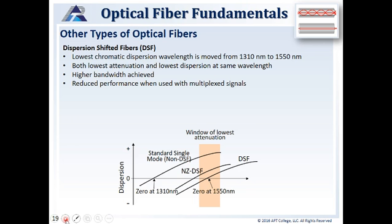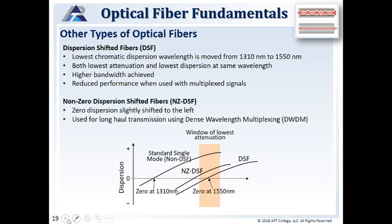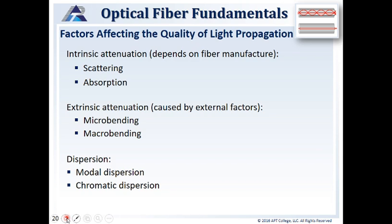We also have DSF, or dispersion-shifted fibers. In these fibers, the lowest chromatic dispersion wavelength is moved from 1,310 to 1,550 nanometers, so both the lowest attenuation and the lowest dispersion occur at the same wavelength, achieving a higher bandwidth or higher bit rate. They do have reduced performance when using multiplexed signals, so we use non-zero dispersion shifted fibers for dense wavelength division multiplexing. In these fibers, we shift our zero dispersion slightly to a lower or shorter wavelength.